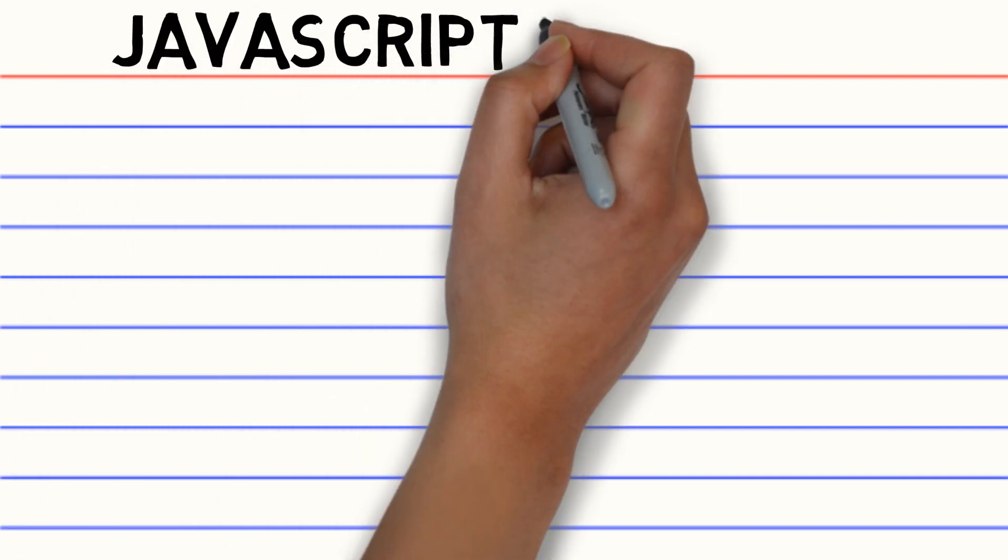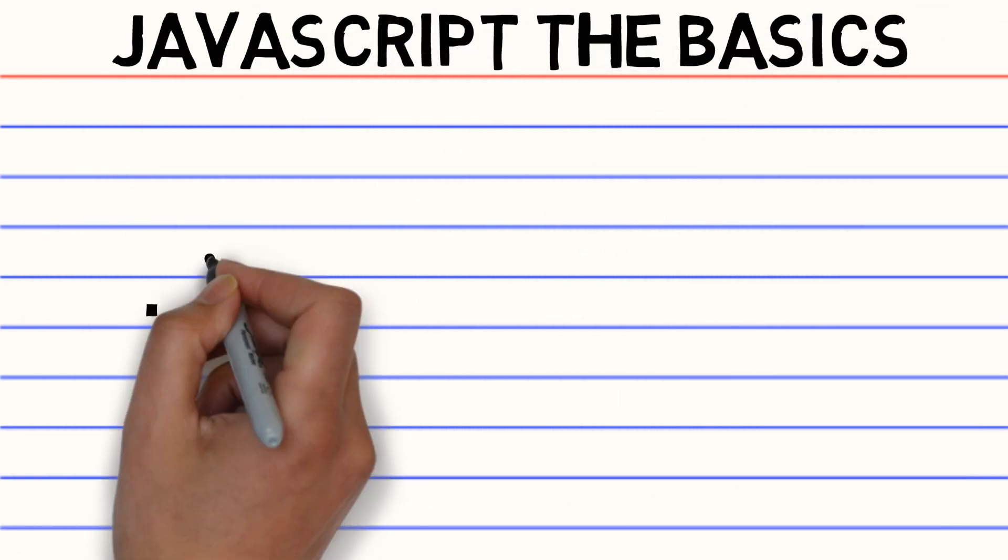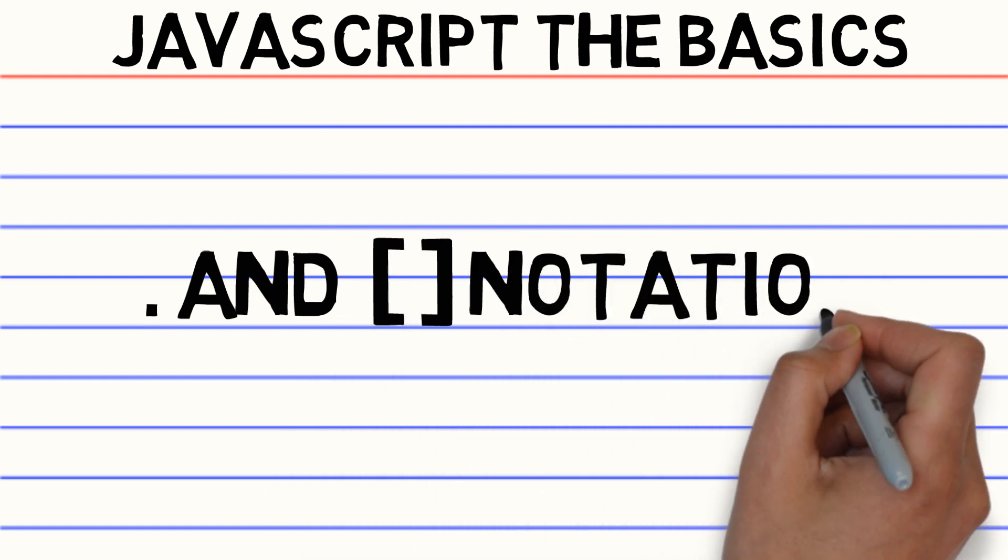Welcome back to JavaScript The Basics. In this lesson, we're going to look at accessing properties of an object with dot and bracket notation.